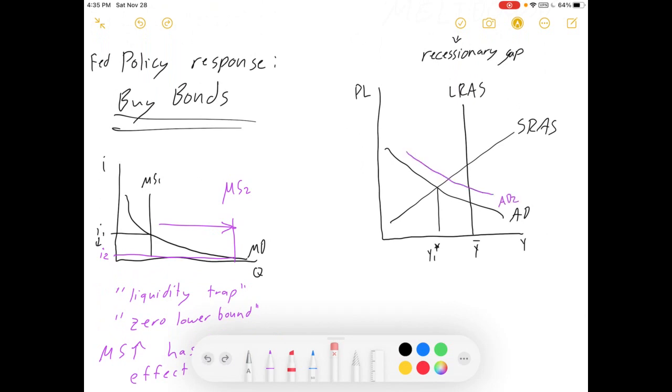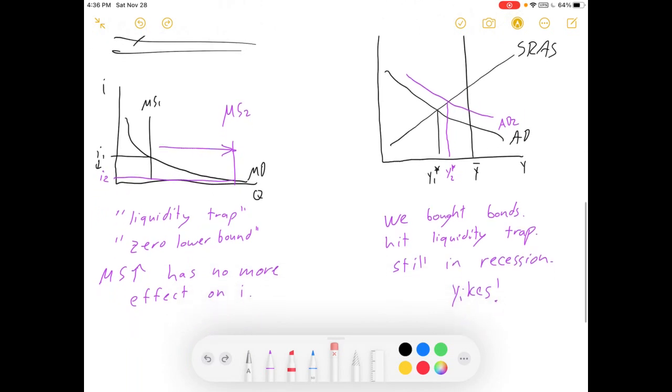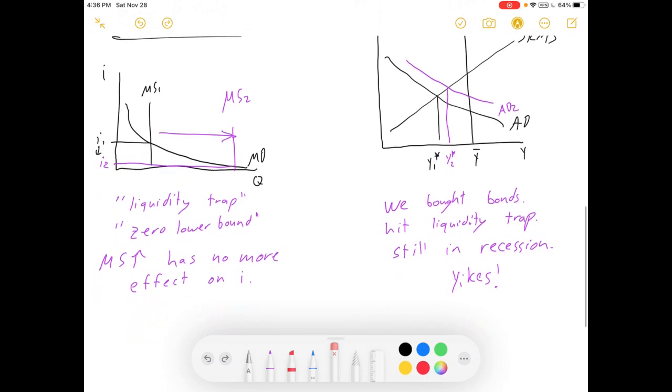So what if, like in the case of the 2008 crisis, aggregate demand didn't get all the way back even when we've hit the zero lower bound? We could find ourselves in a situation that looks like this, a little better than it was but still in a recessionary gap, and have zero traditional monetary policy effectiveness remaining because the interest rates bottomed out. We already bought the bonds, we hit a liquidity trap, we're still in a recession. Bad news, right?